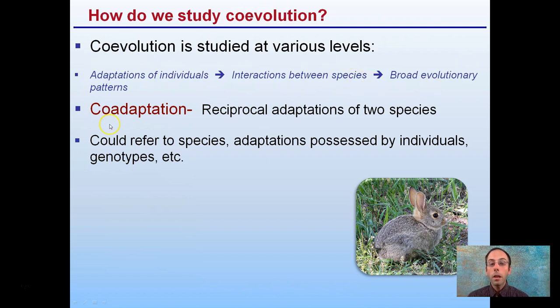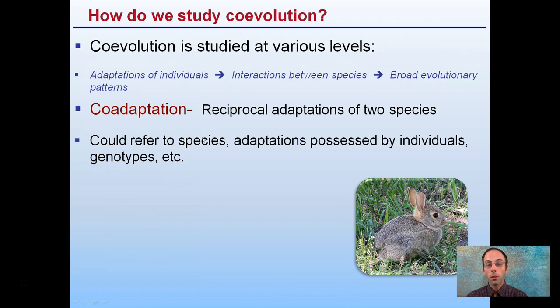Co-adaptation is the reciprocal adaptations of two species. This could refer to species, or it could also refer to adaptations possessed by individuals and their genotypes.